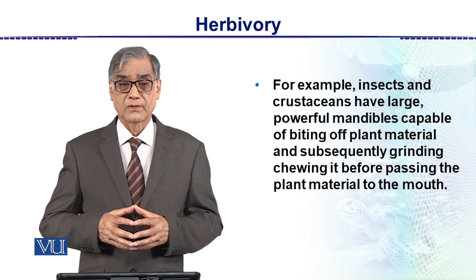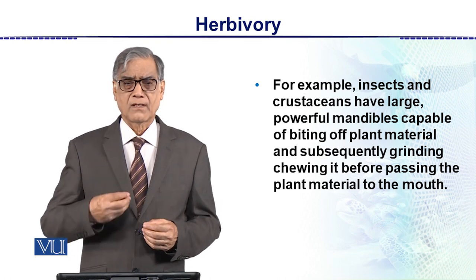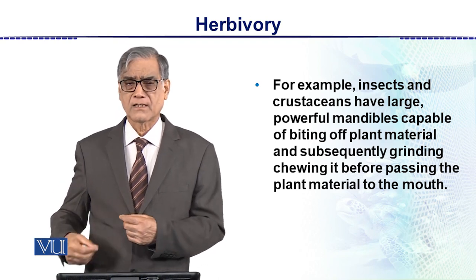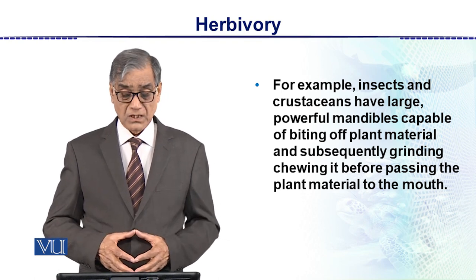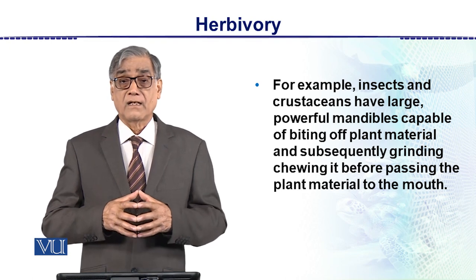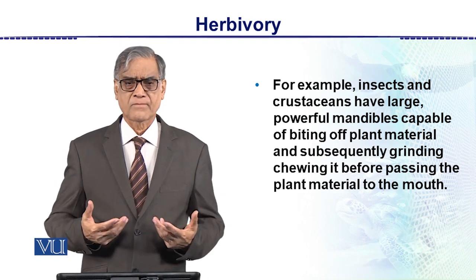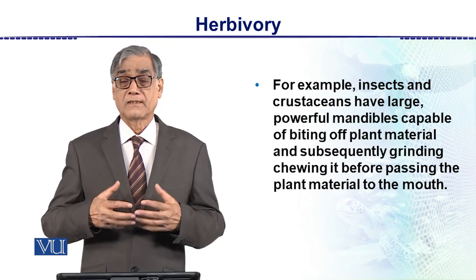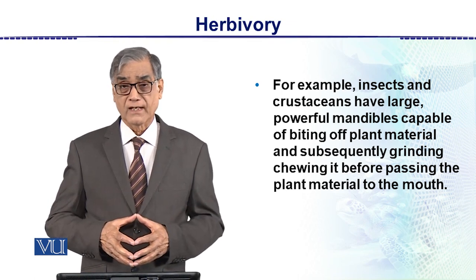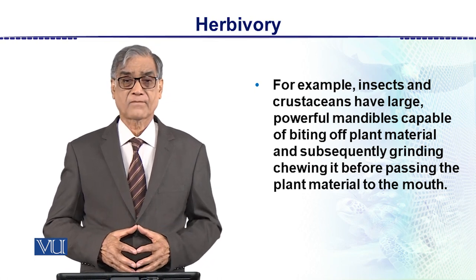The plant material then passes to the posterior part of the mouth, is engulfed into the esophagus, then the stomach or intestine where it is digested, and fecal matter comes out of the body. This is all about herbivory in invertebrates. Many larger, more advanced terrestrial animals are also herbivorous, but that will be discussed separately.